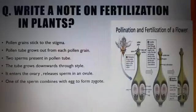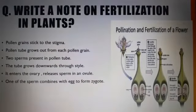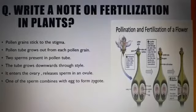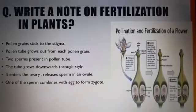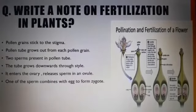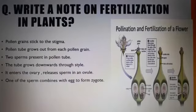Now come the question answers. Write a note on fertilization in plants. Pollen grains stick to the stigma and a pollen tube grows out from each pollen grain. Two sperms are present in the pollen tube. The pollen tube grows downward through the style.